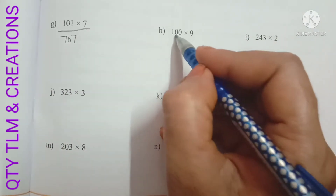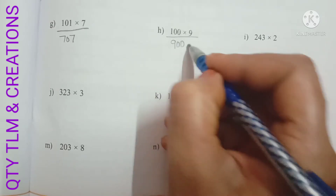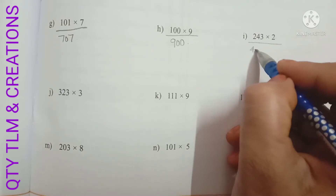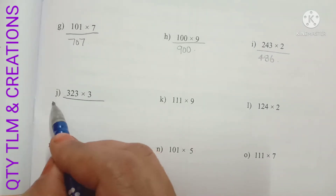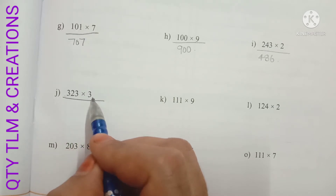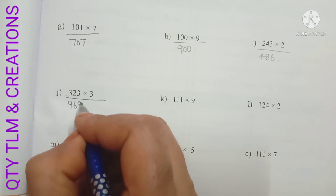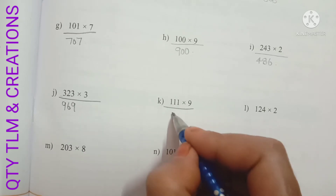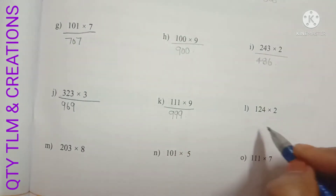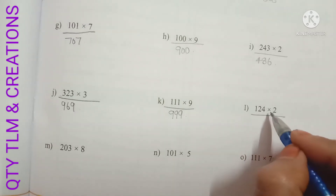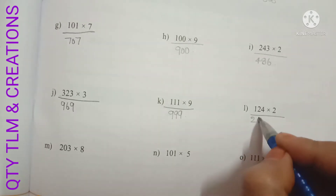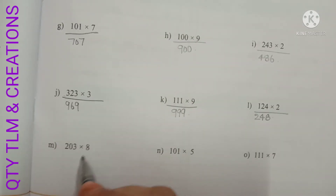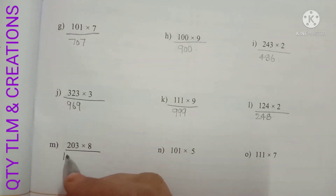Next H: 100 into 9, we will get 900. Next I: 243 into 2, we will get 486. Next J: 323 into 3, we will get 969. Next K: 111 into 9, we will get 999. Next L: 124 into 2, we will get 248. Next M: 203 into 8, we will get 1624.